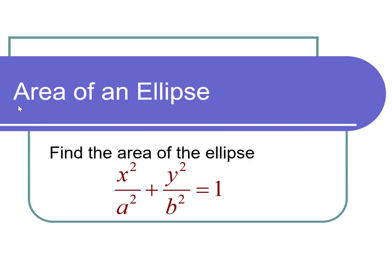This is a video on the area of an ellipse. The question states find the area of the ellipse x squared over a squared plus y squared over b squared is equal to 1.